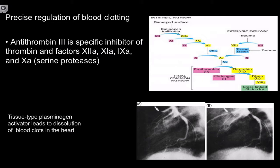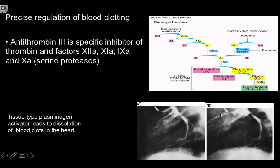Many drugs work along a similar mechanism to antithrombin 3. Tissue plasminogen activator, or TPA, is used to break down clots after healing has occurred. Clinically, TPA is used in cases of myocardial infarction — administered through a cath lab or central line — and you can actually see the improvement in blood flow in the before and after images shown here.